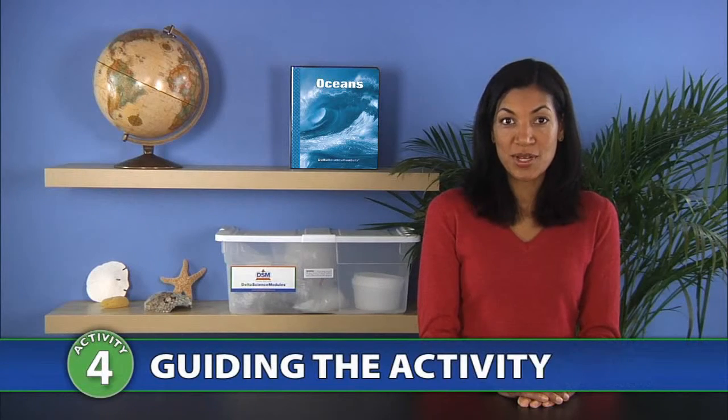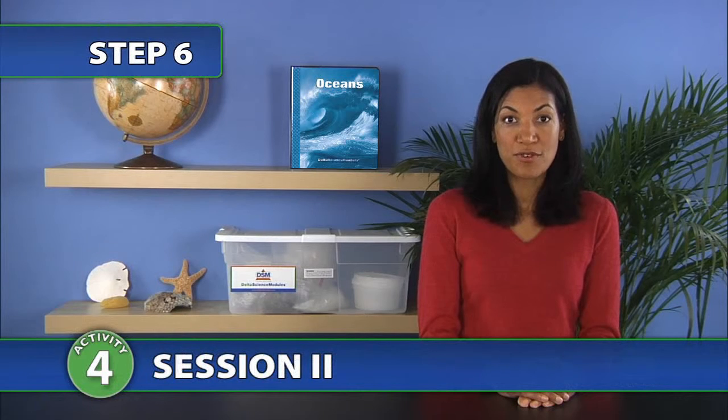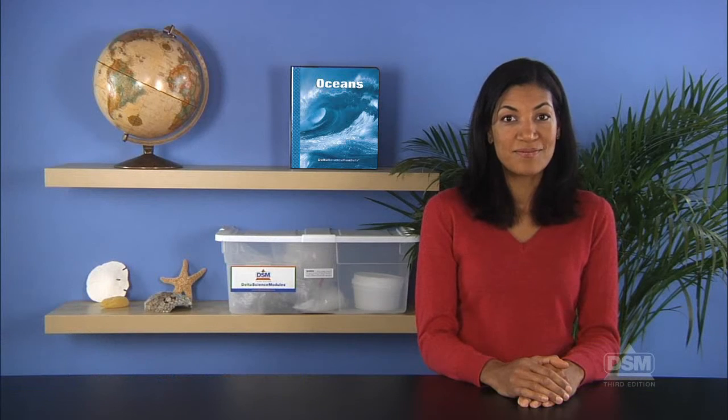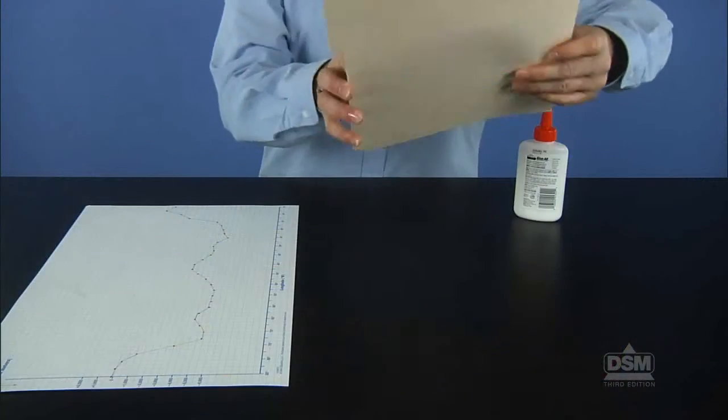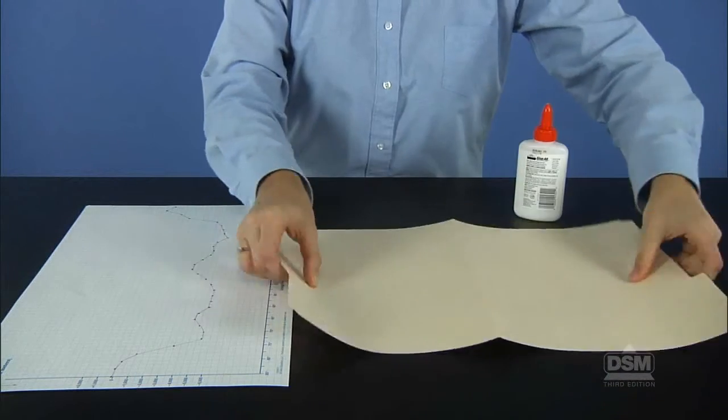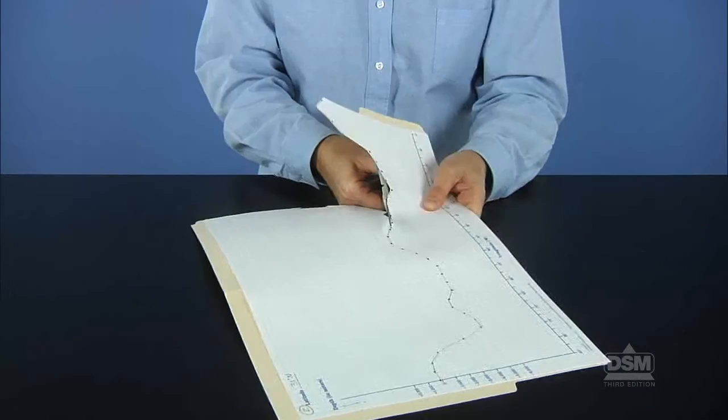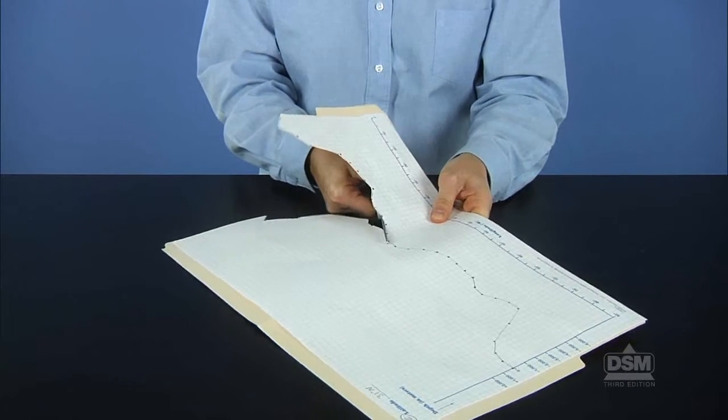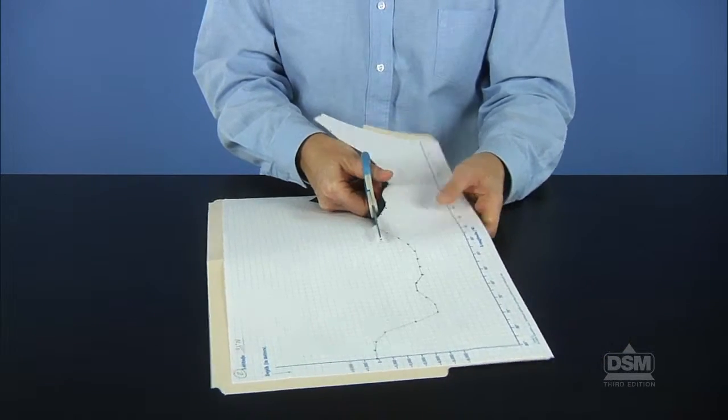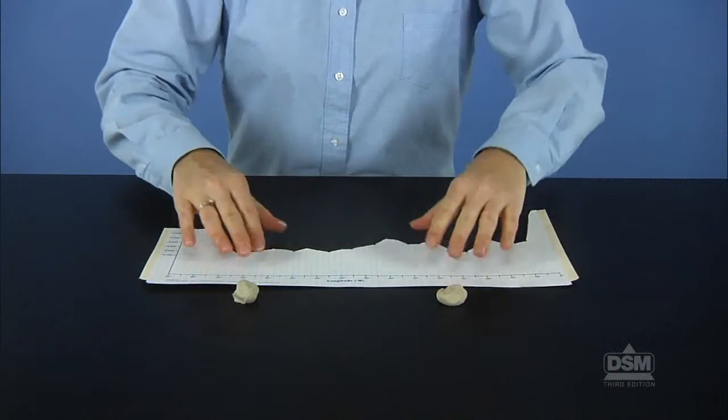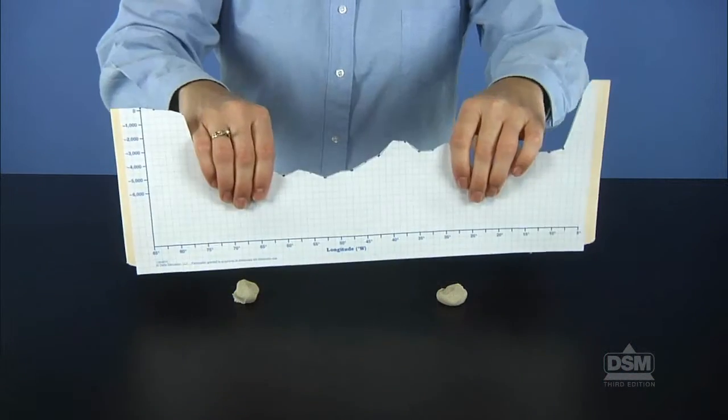To begin Session 2, distribute teams' depth profiles and the other materials. Tell students to open the folder, lay it flat, and glue their depth profile to it. Then, have students cut out their profile along the axis lines and the graphed line. Instruct students to use the clay to make two feet to stand their depth profiles up.